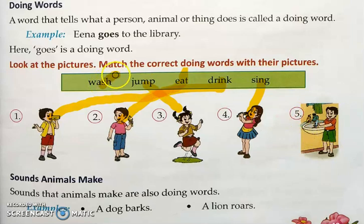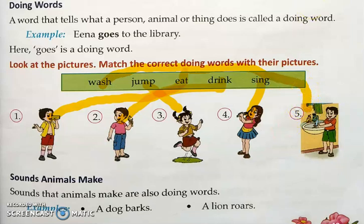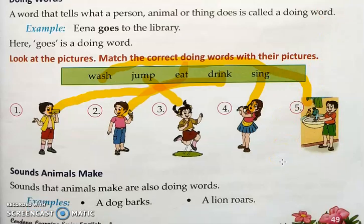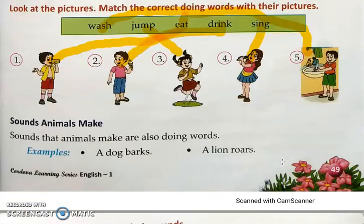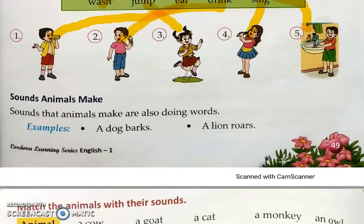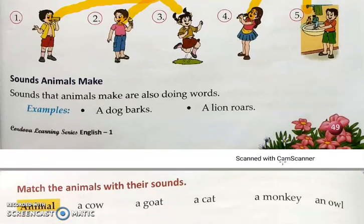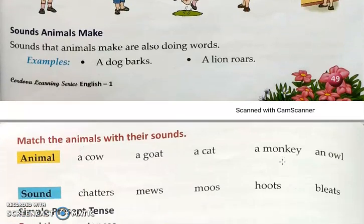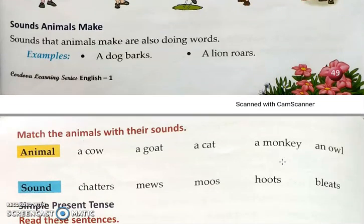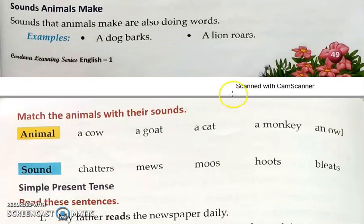You can match like this so you don't get confused — the alphabets are not given for matching, so you can draw the lines directly. Now let us see the next question. This is the next topic in grammar, related to doing words.